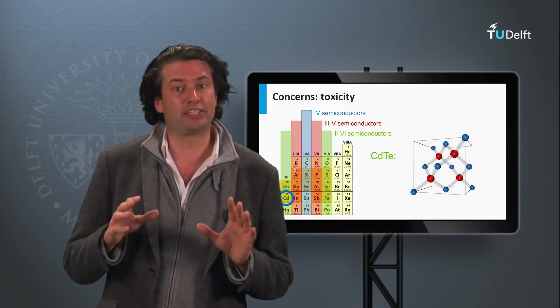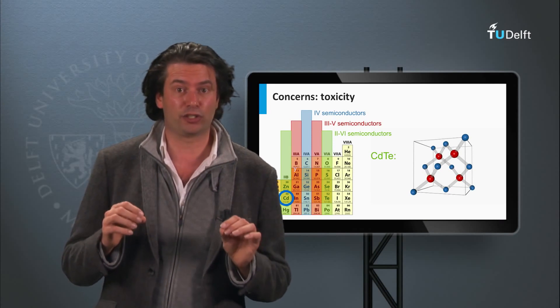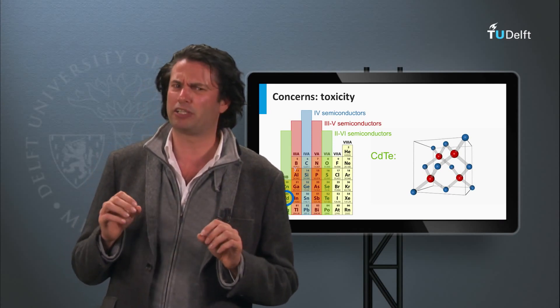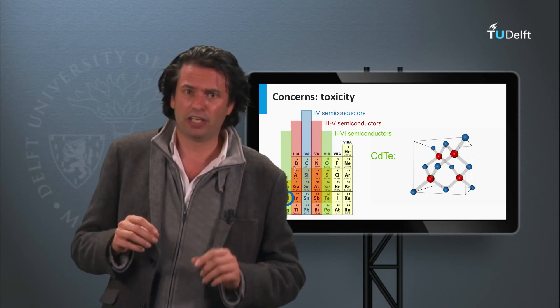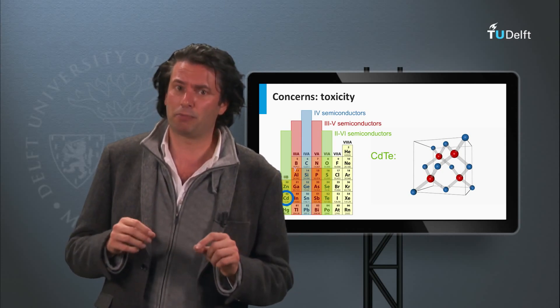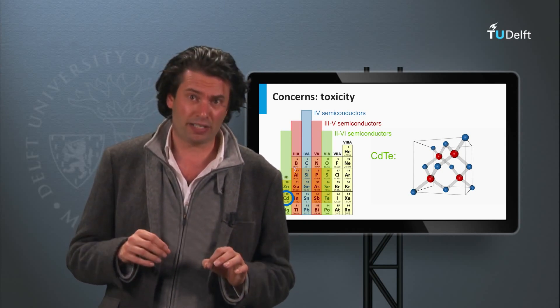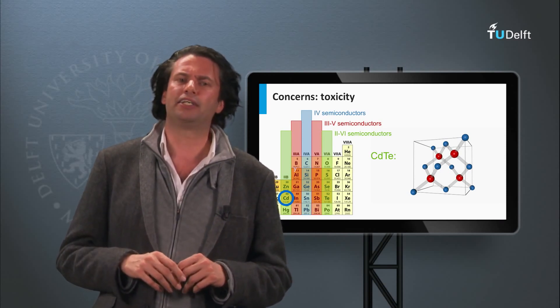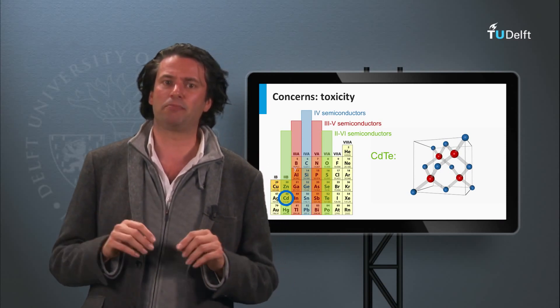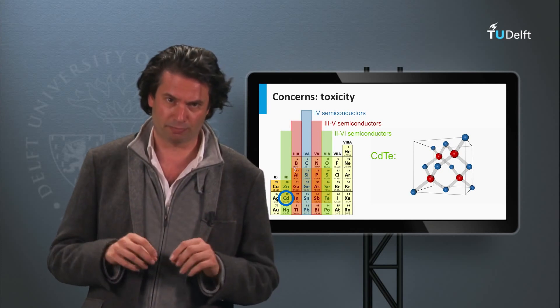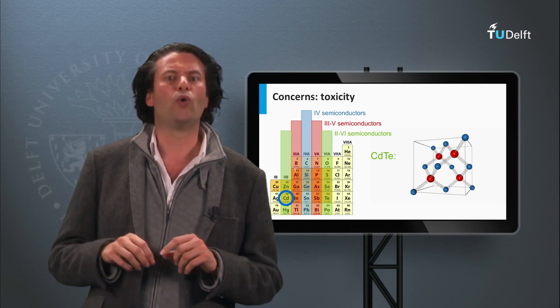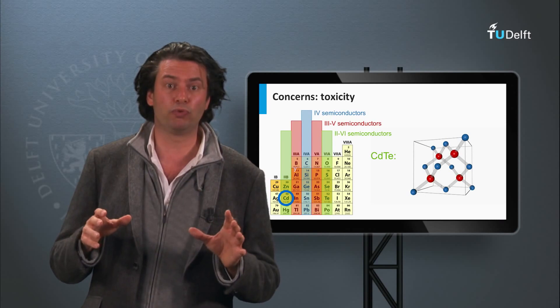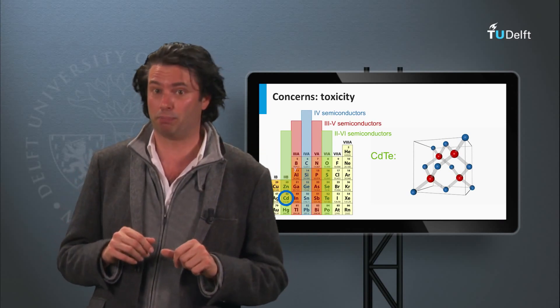An important aspect to be addressed is that the cadmium telluride solar cells contain the toxic material cadmium, however the insoluble cadmium compounds like cadmium telluride and cadmium sulfide are much less toxic. It is important to prevent cadmium entering into the ecosystem. The question is whether the cadmium telluride modules would be a main source of cadmium pollution.